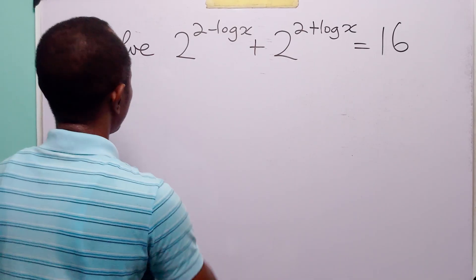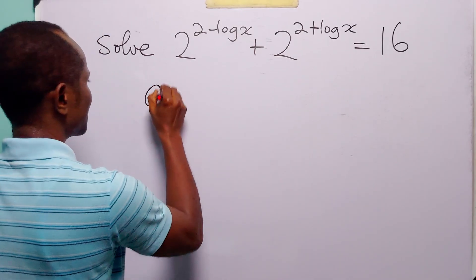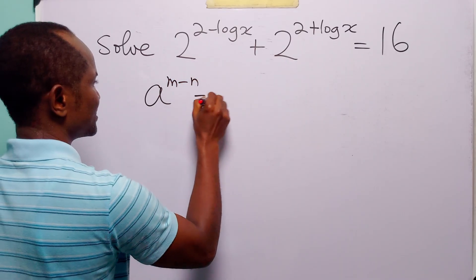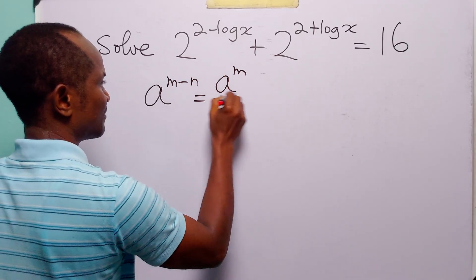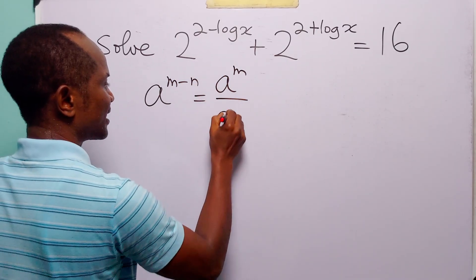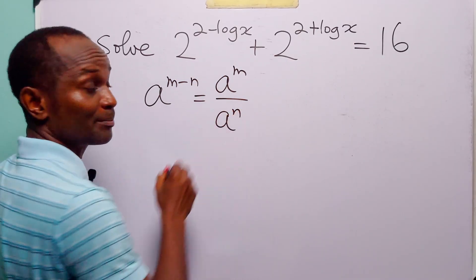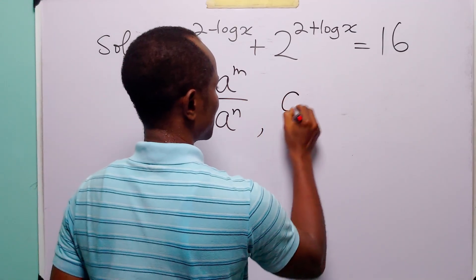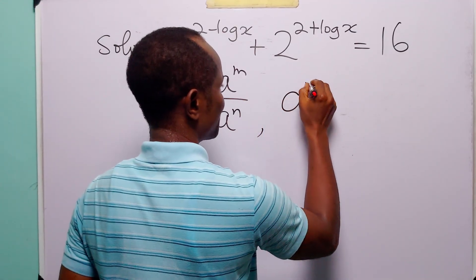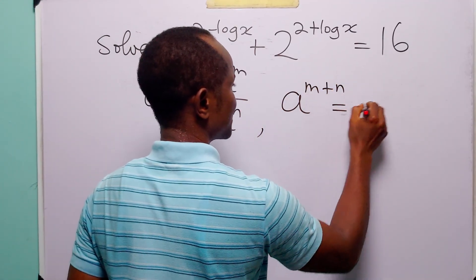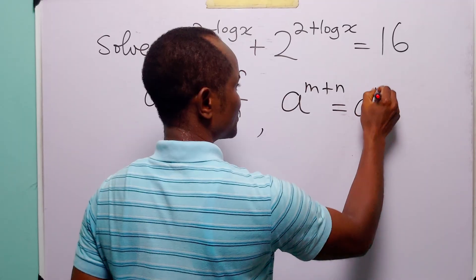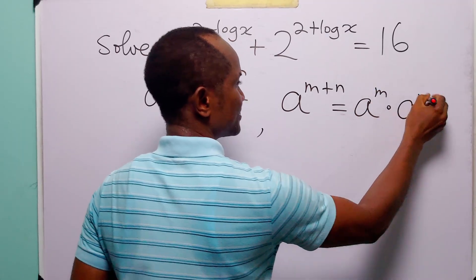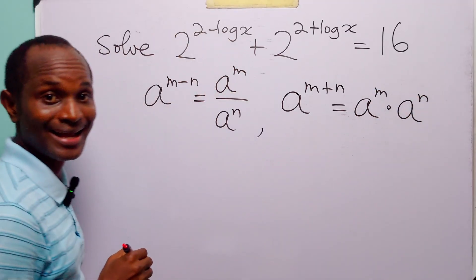The first law is: a to the power m minus n is equal to a to the power m divided by a to the power n. The second law is: a to the power m plus n is equal to a to the power m multiplied by a to the power n.